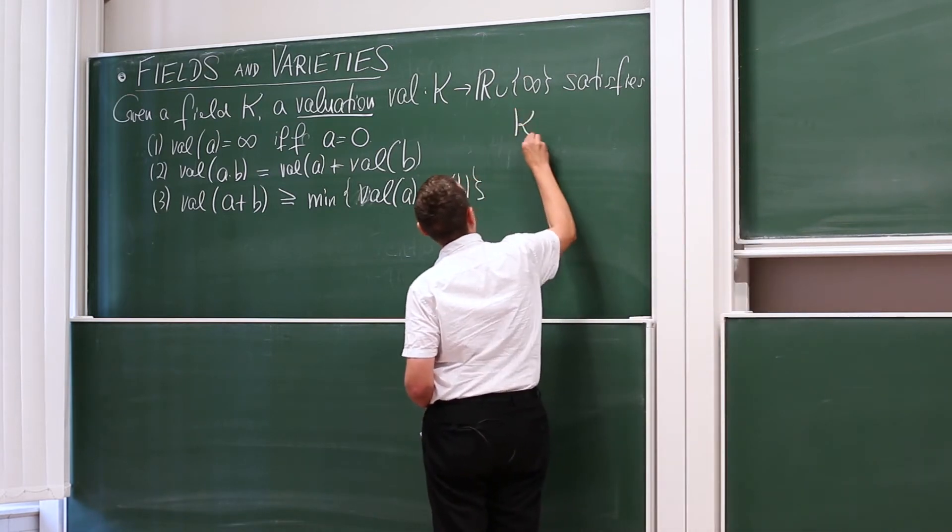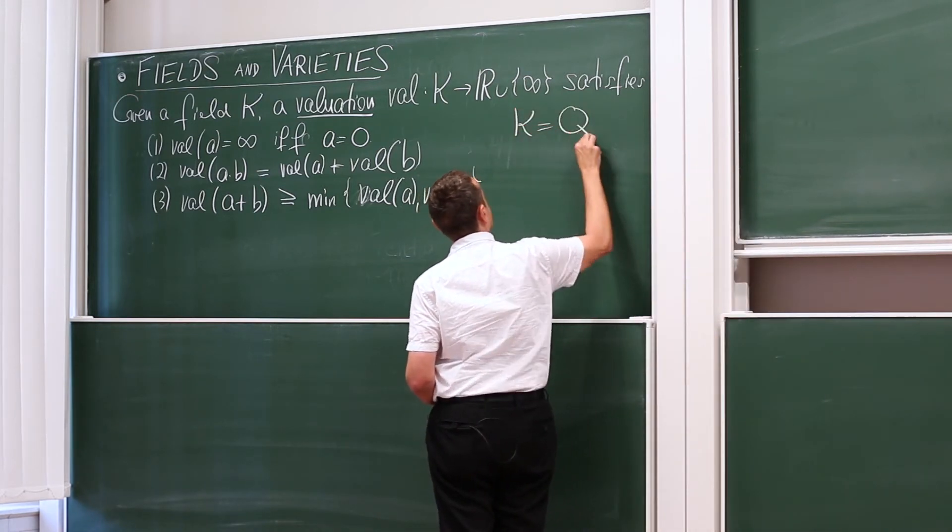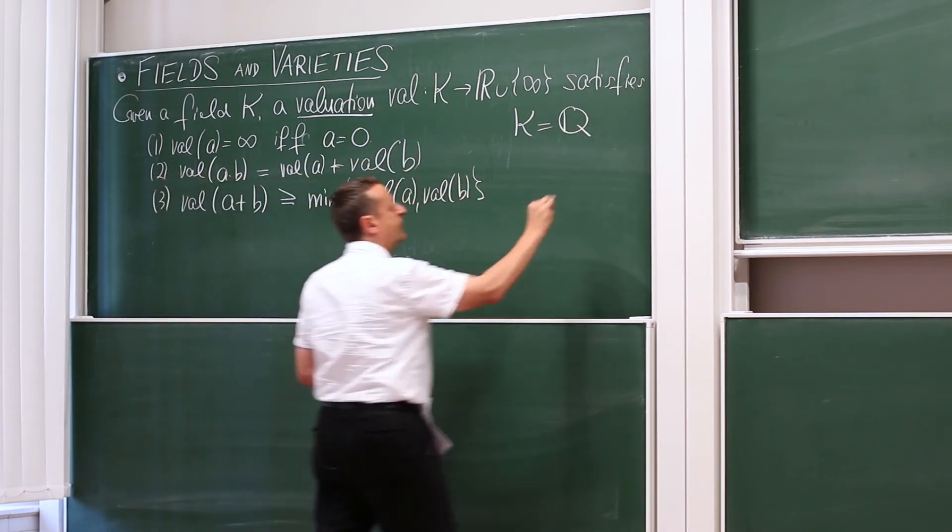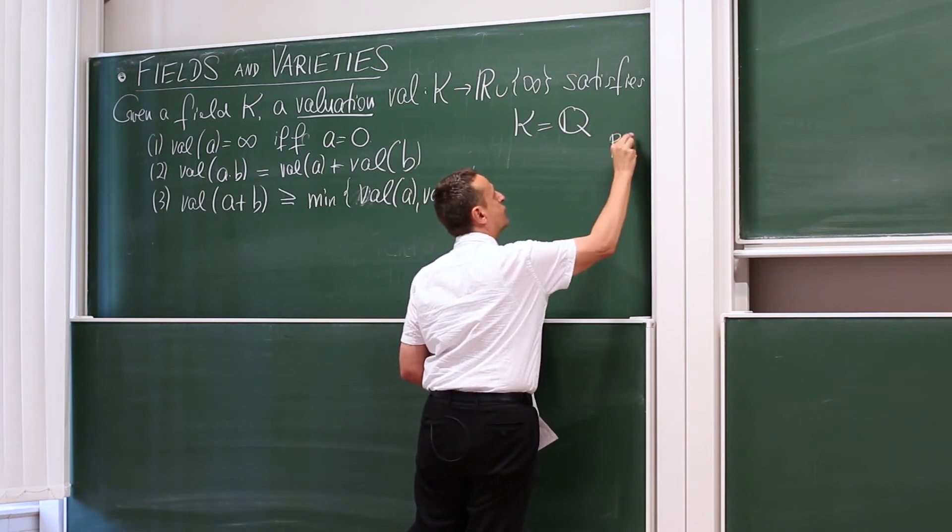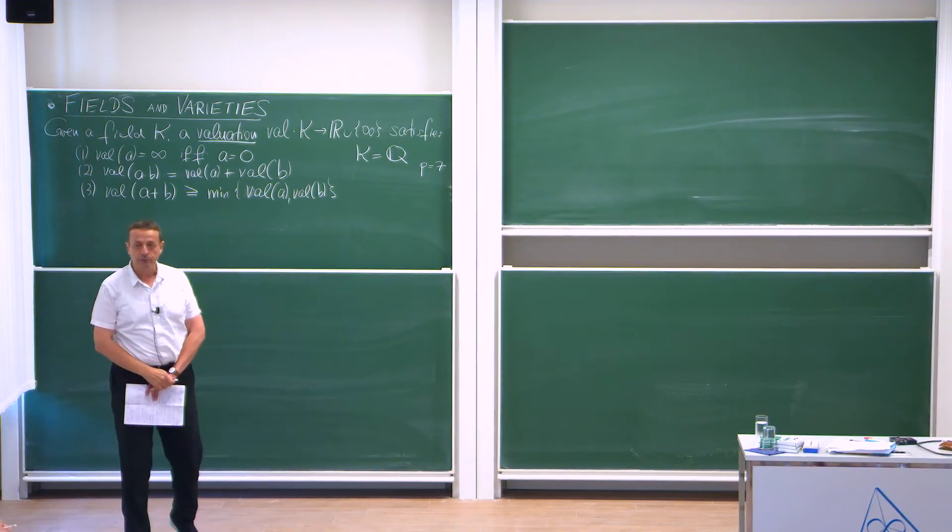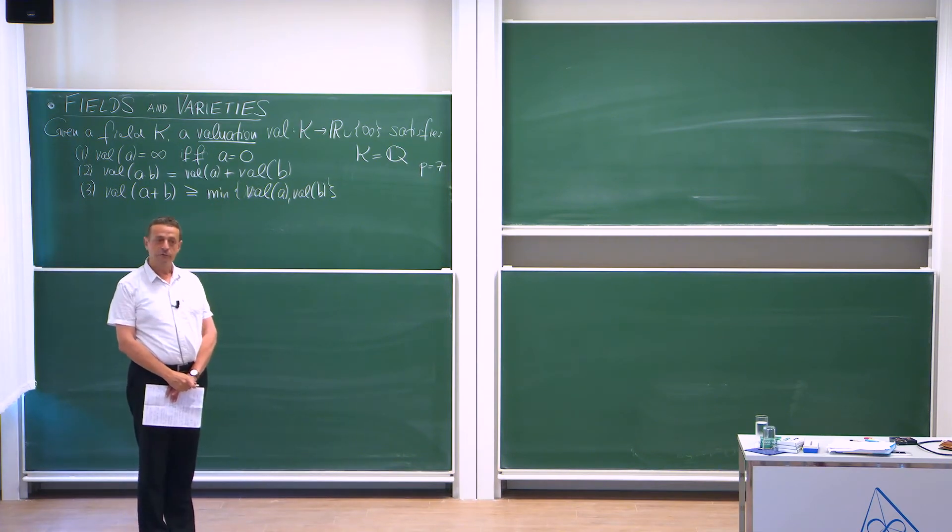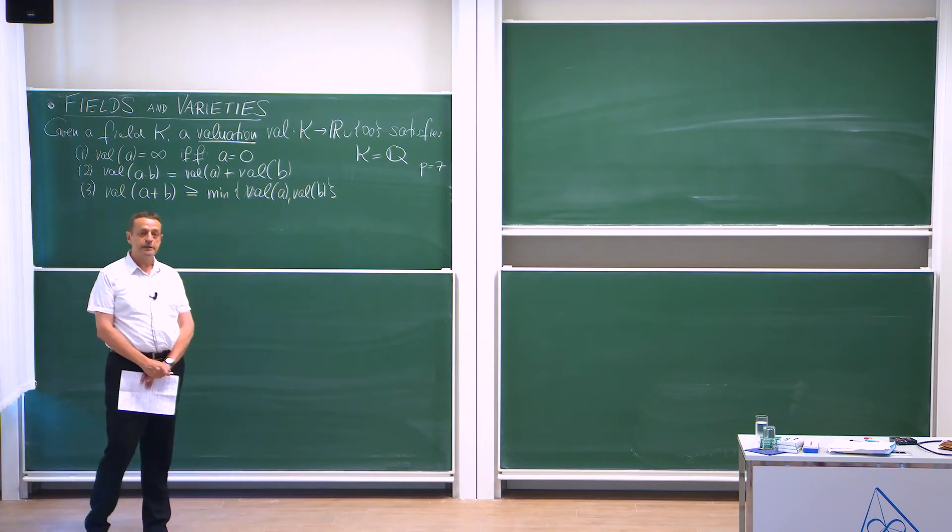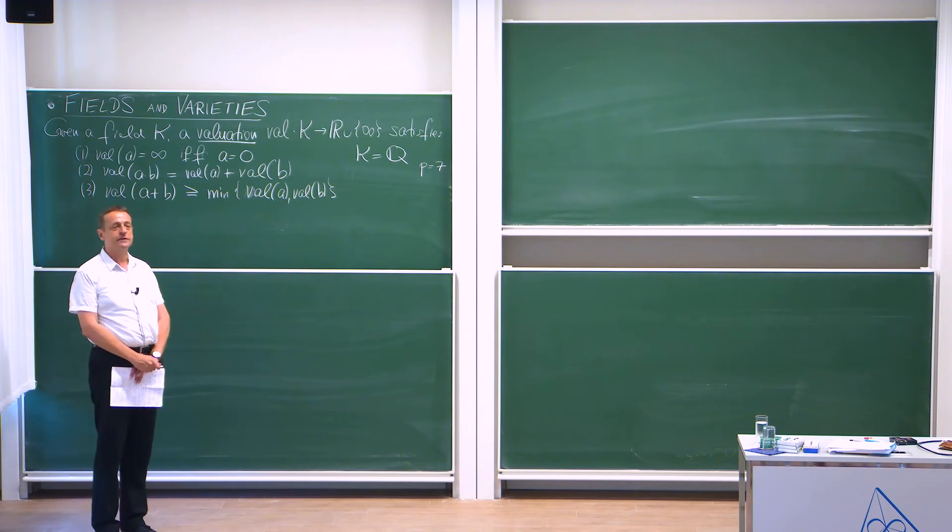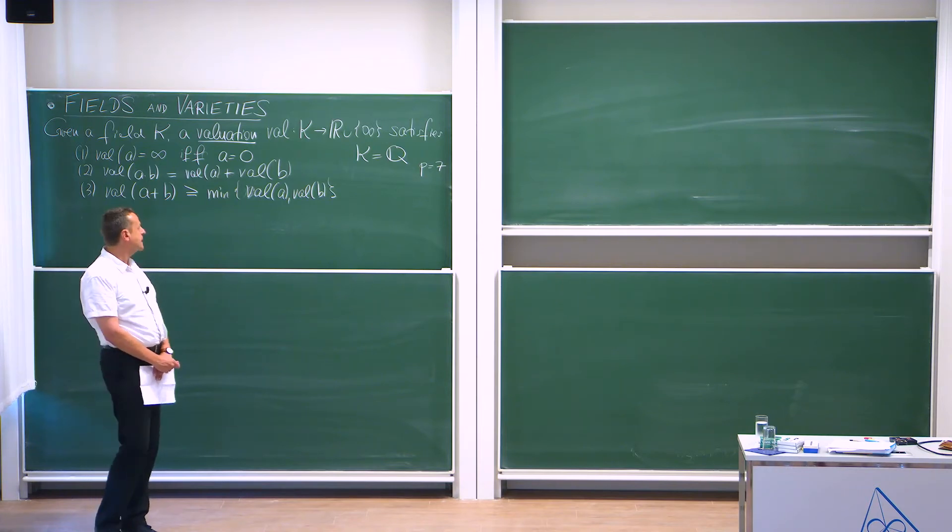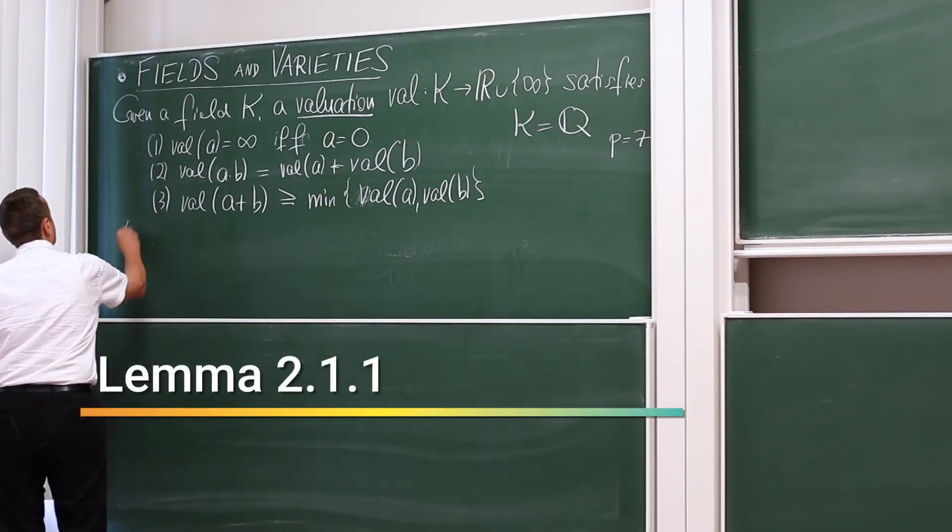Now, one example of a field we might think of is the field of rational numbers. If we pick a prime number, for example, P equals 7, then there is a so-called 7-adic valuation. The valuation of a 7-adic valuation of a rational number is the power of 7 that appears in it. If the numerator has a power of 7, then it's that power. If the denominator has a power of 7, it's minus that power.